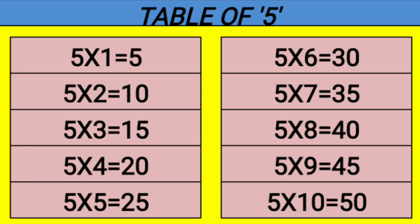Table of 5. 5 1s are 5, 5 2s are 10, 5 3s are 15, 5 4s are 20, 5 5s are 25, 5 6s are 30.